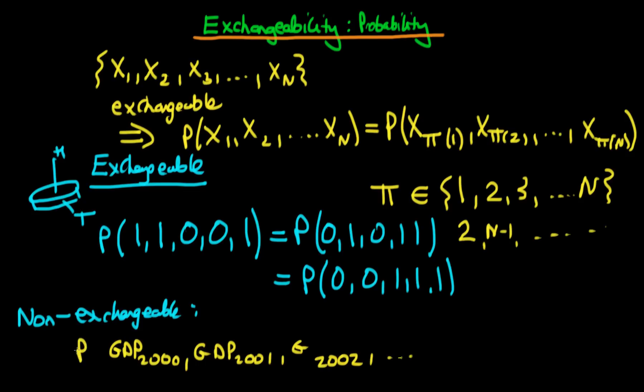Well, then in this circumstance, the probability that we would obtain that particular sequence of GDP is not necessarily the same as if I was to permute the values. So instead, I was to move 2002 to here, and 2001 all the way out to the end here.